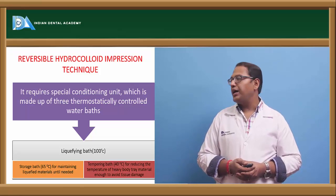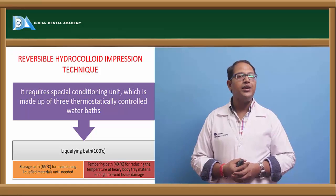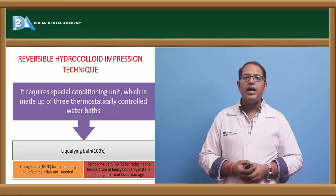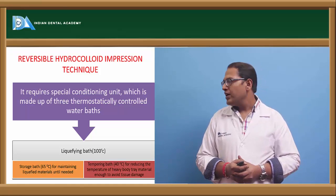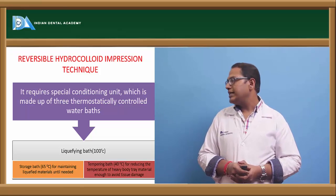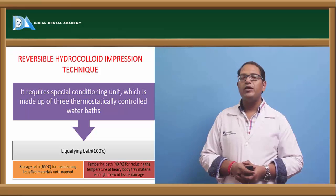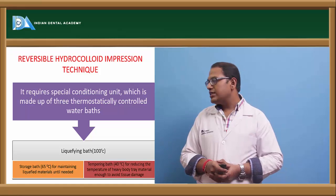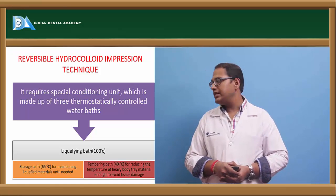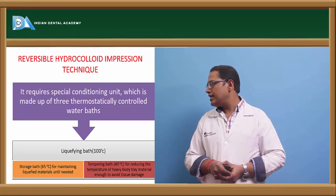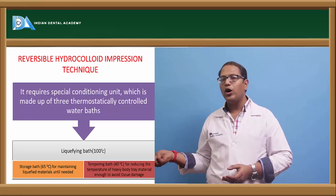The reversible hydrocolloid impression technique requires a special conditioning unit made up of a thermostatically controlled water bath. We have a liquefying bath at around 100 degrees Celsius, a storage bath at 60 to 65 degrees Celsius which maintains the liquefied material until needed, and a tempering bath at 40 to 45 degrees Celsius for reducing the temperature of the heavy body tray material enough to avoid tissue damage.